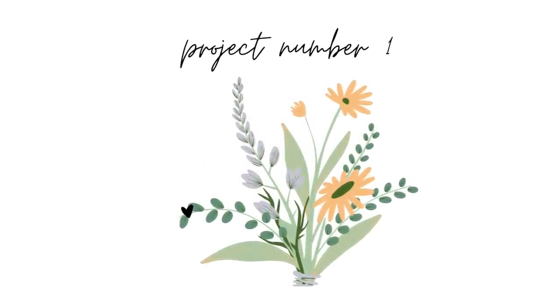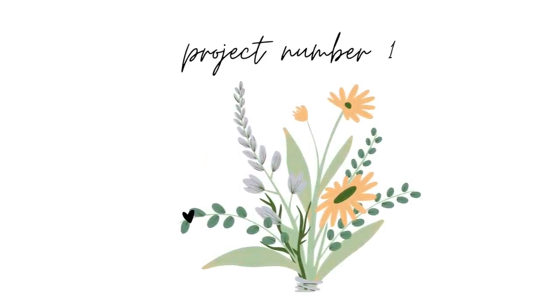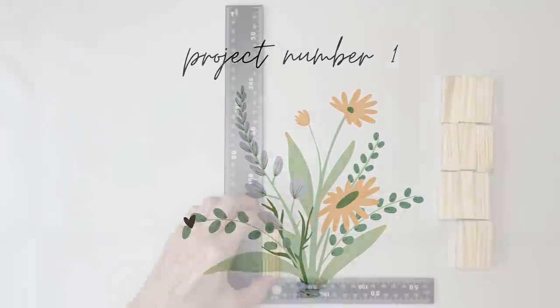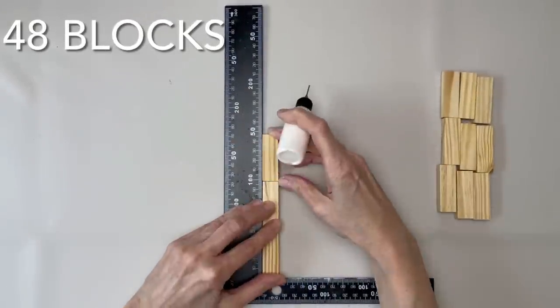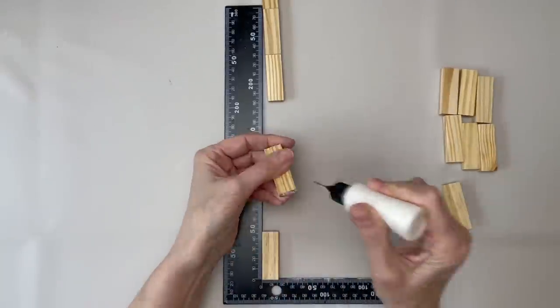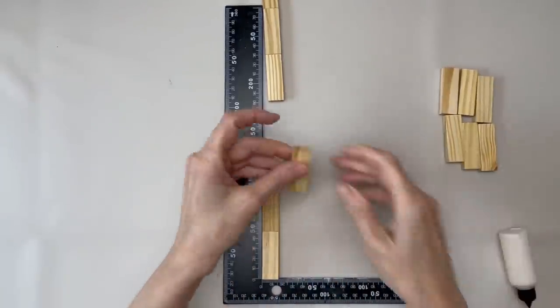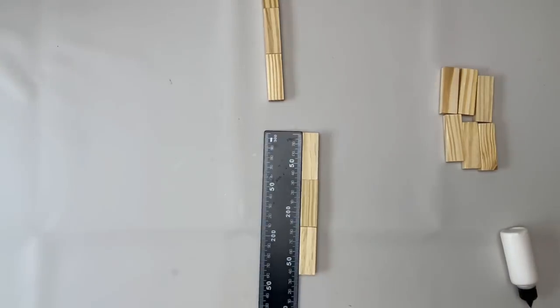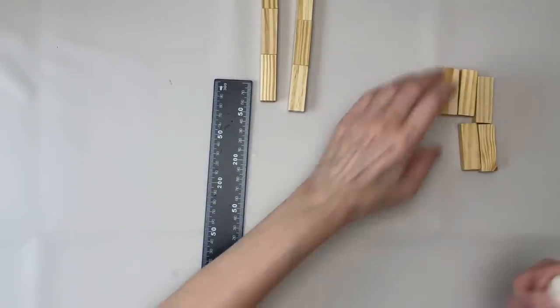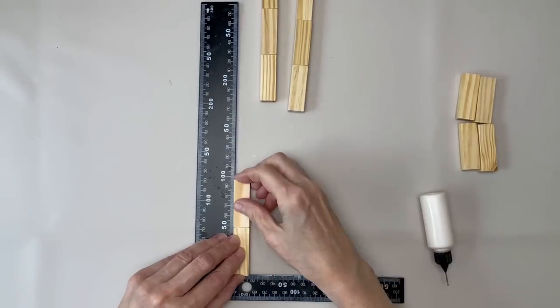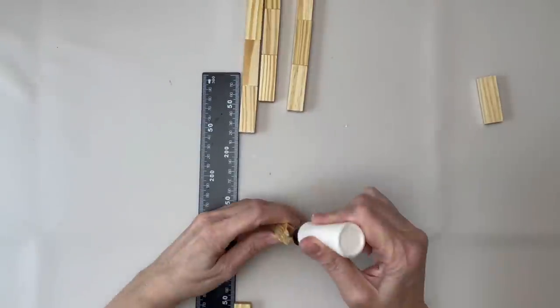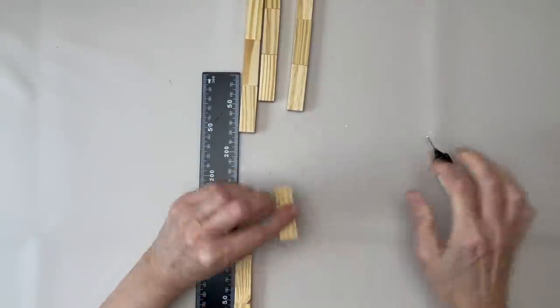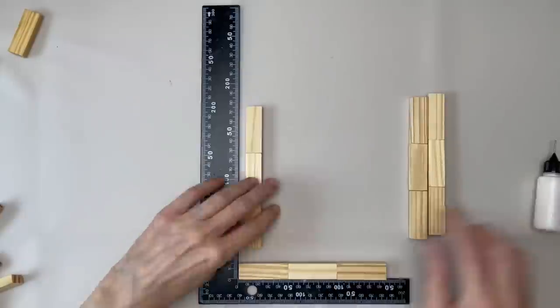First project today is going to be some wall decor. You'll start by gluing together four sets of three blocks glued end to end. When these have dried, glue them together in a square as you see on screen.